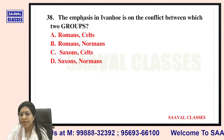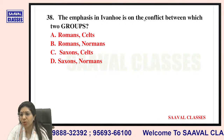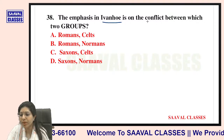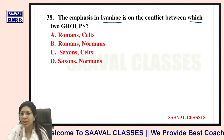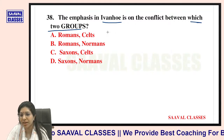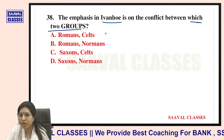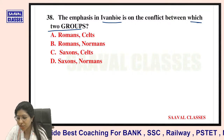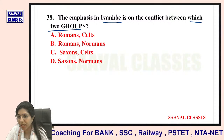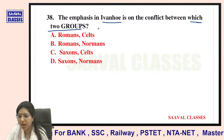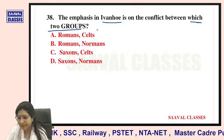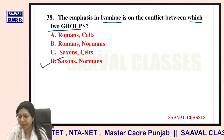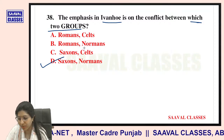Question number thirty-eight: The emphasis in Ivanhoe is on the conflict between which two groups? Options are Roman-Celts, Roman-Normans, Saxon-Celts, or Saxons and Normans. This conflict is shown between Saxons and Normans.